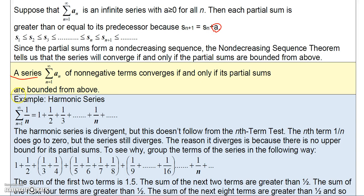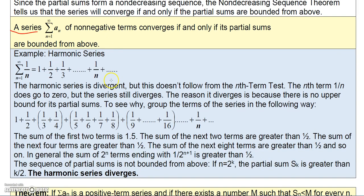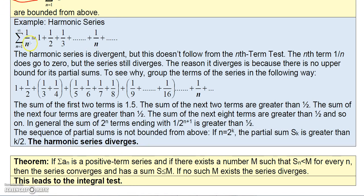Now we're going to return to the harmonic series 1/n. The harmonic series is divergent, but this doesn't follow from the nth term test — the nth term 1/n does go to zero. As I showed earlier, when I applied the nth term test, the limit of the nth term as n goes to infinity is 0, but I warned you not to assume that means it converges. That just means we didn't know whether it converged or diverged.